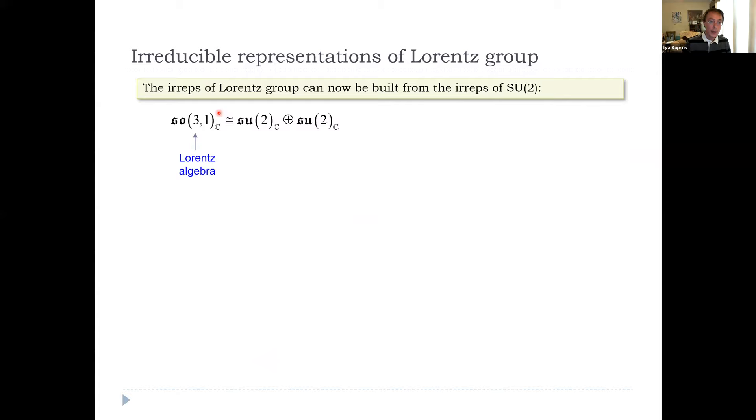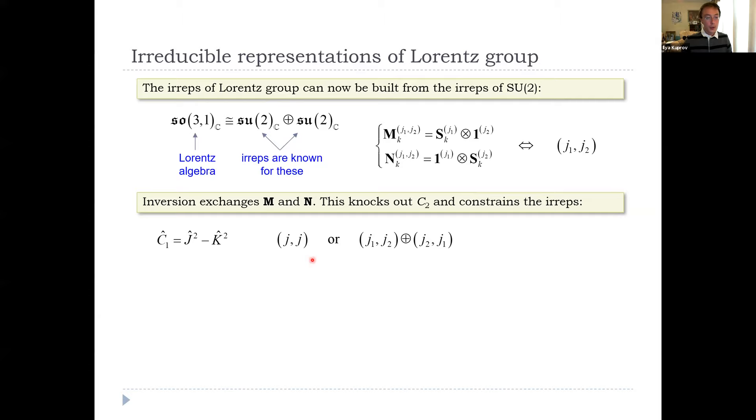Okay. Our Lorentz algebra complexification is a direct sum of two instances of SU2. For these, we know everything mathematicians told us—the irreducible representations. Because we have two SU2s, we have two quantum numbers, and then a direct product between the corresponding matrices. If we add inversion to the group, it turns out that the boosts change sign under inversion, so that other Casimir operator, which we didn't discuss, actually gets knocked out. Only one Casimir operator remains. Then it turns out inversion also requires us to either have two Js equal or to have this interesting direct sum, J1 J2 direct sum J2 J1. And actually, if you look at what they physically mean, they correspond to different types of particles and fields. Fermions go one way, bosons go another way, electromagnetic fields go the third way. There are different irreducible representations of the Lorentz group.